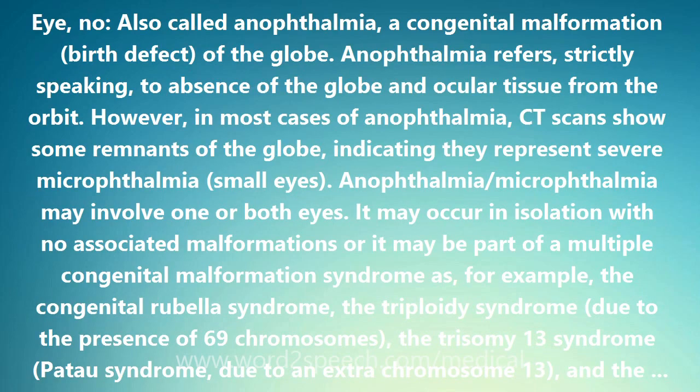Anophthalmia, also called anophthalmia, is a congenital malformation — a birth defect — of the globe. Anophthalmia refers, strictly speaking, to absence of the globe and ocular tissue from the orbit. However, in most cases of anophthalmia, CT scans show some remnants of the globe, indicating they represent severe microphthalmia — small eyes.